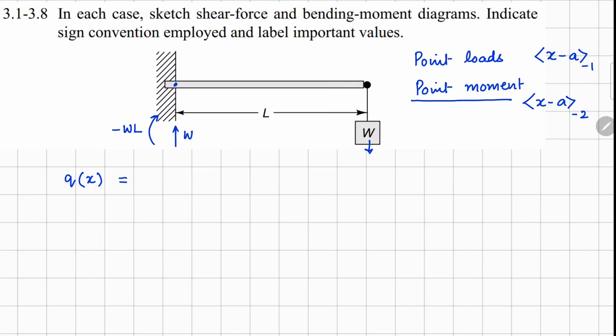If I want to write down the intensity function for this, which is Q(x), we have this moment minus WL. For this we'll have (x minus 0) to the power minus 2. This one is x equals 0, this is x equals L.